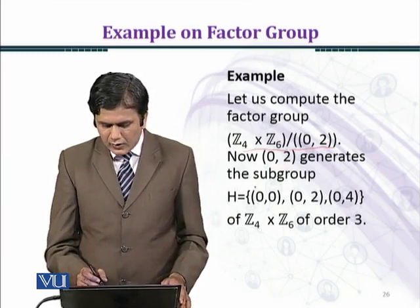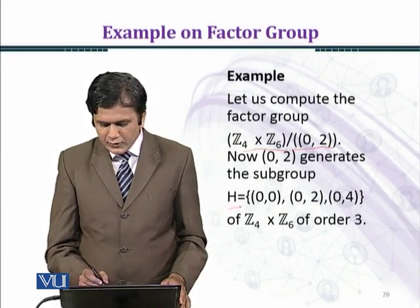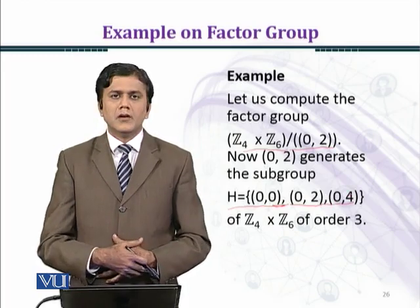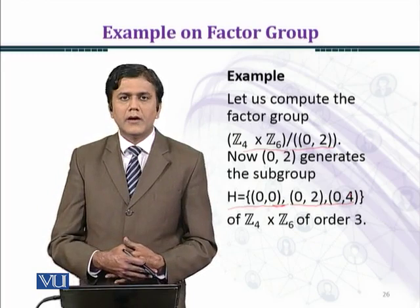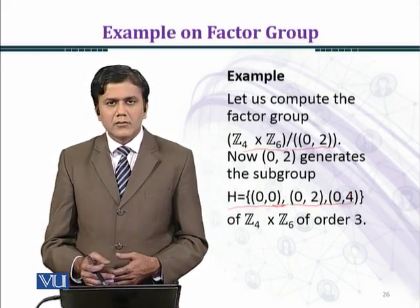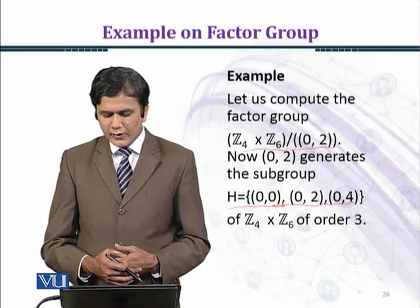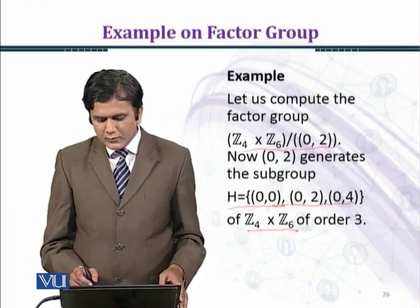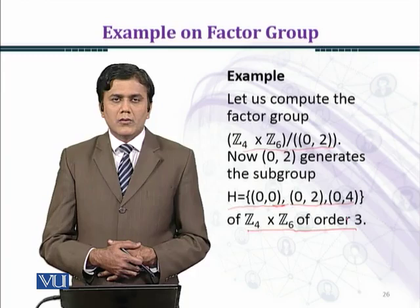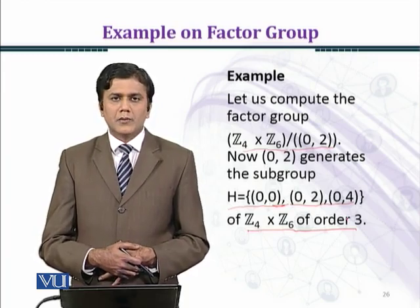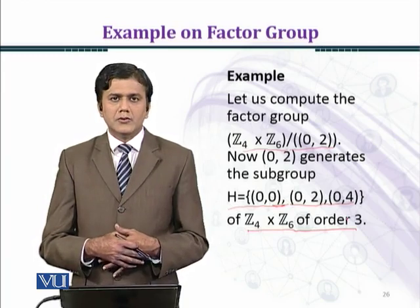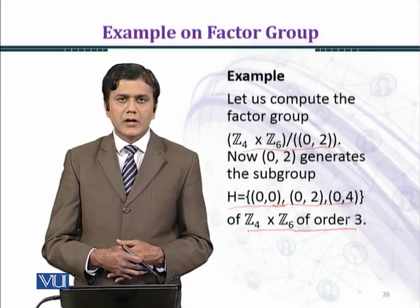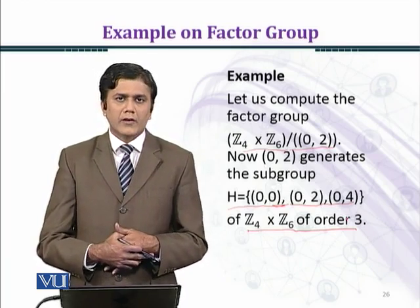Now (0,2) generates the subgroup H equal to {(0,0), (0,2), (0,4)}. So the cyclic group generated by (0,2) contains 3 elements — (0,0), (0,2), and (0,4) — and is of order 3. If you count the number of cosets, they will be 24 over 3, giving a total of 8 cosets in the factor group.